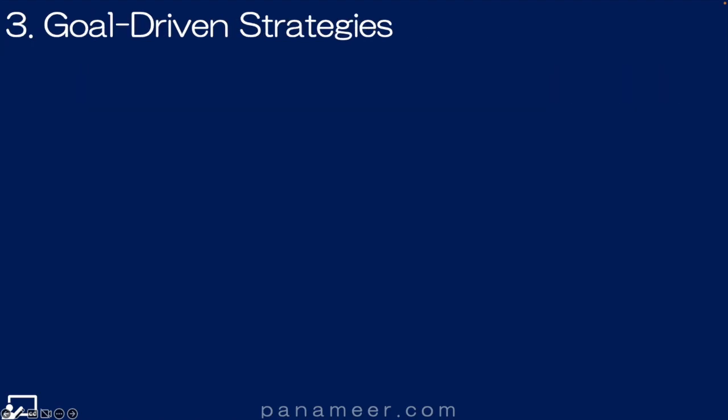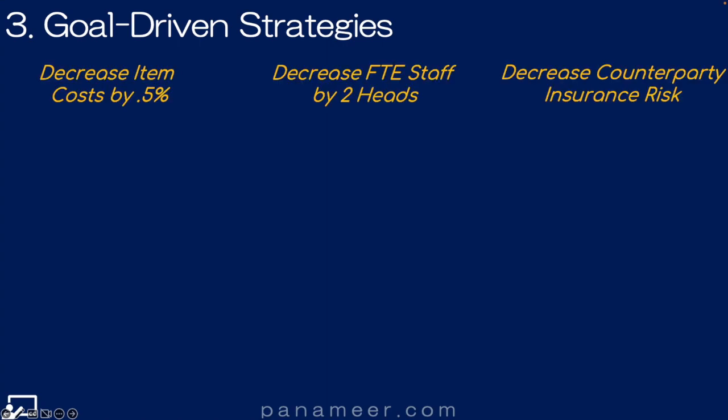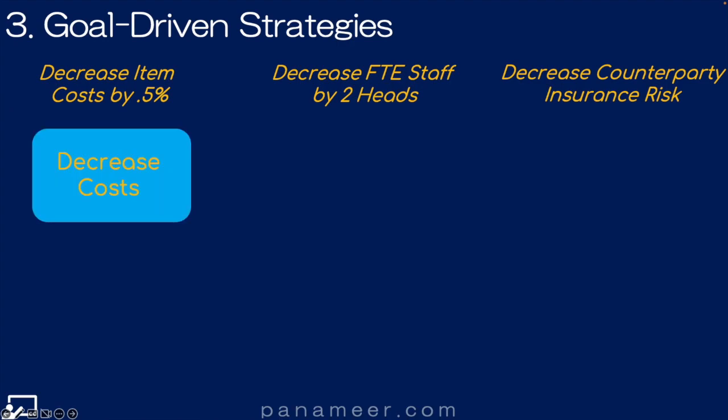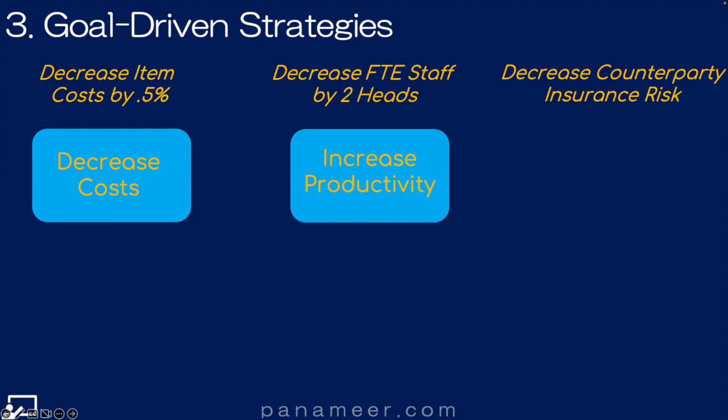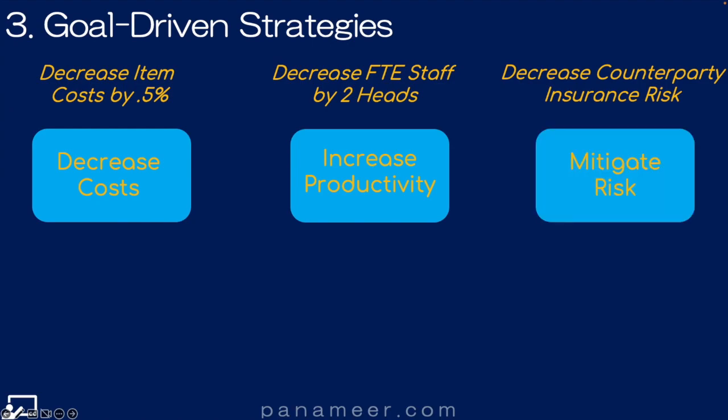Slide three: goal-driven strategies. Let's define a strategy to achieve each of our goals. First is a cost reduction strategy. Second is a productivity increase strategy. And the third is a risk mitigation strategy.